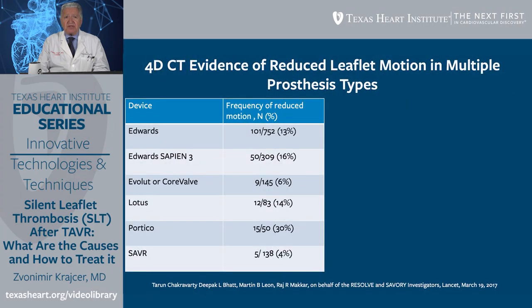Data from this publication using 4D CT on reduced leaflet motion across multiple prosthesis types showed: with Edwards prostheses (Sapien XT and Sapien 3), the incidence was 13%; with the newer Sapien 3 alone, it was 16%. Evolut or Evolut CoreValve had an incidence of 6%, which is lower. Lotus had a 14% incidence and Portico had the highest at 30%.